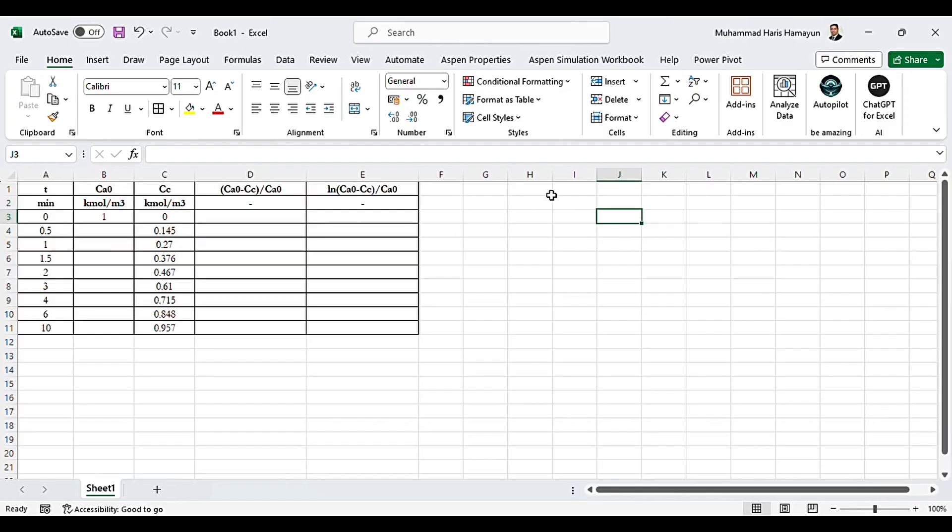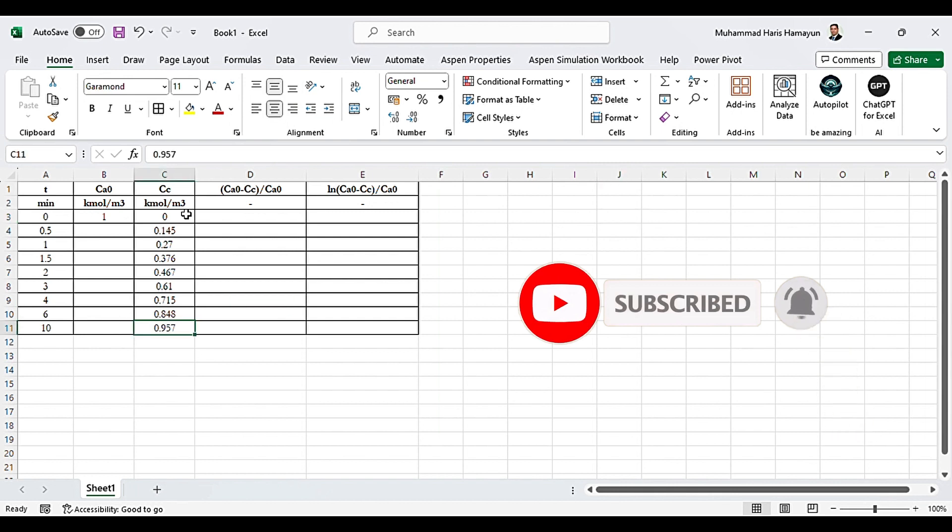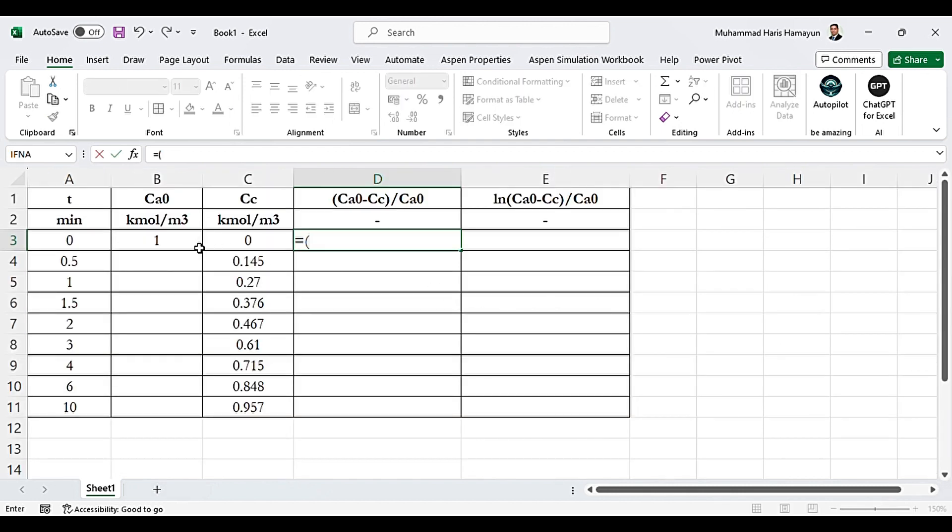We will go to the excel now. So now coming to the excel. And we know that time and concentration data is given to us. So at time t is equal to 0 the concentration of the C ethylene glycol is 0. While the initial concentration of ethylene oxide is 1 for all cases. And accordingly up to time to 10 minute the concentration is 0.957 kmol per cubic meter. So first we need to calculate C0 minus C of C over C0. So that is equal to C0 minus C of C that is closed into C0. But now since C0 value will remain the constant. So we apply a dollar sign over here.